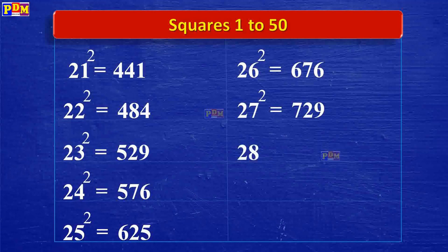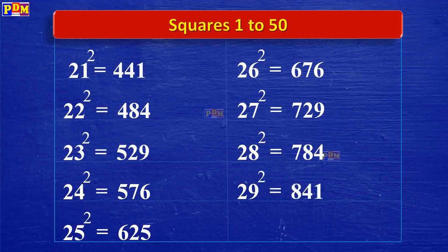28 squared is 784. 29 squared is 841. 30 squared is 900.